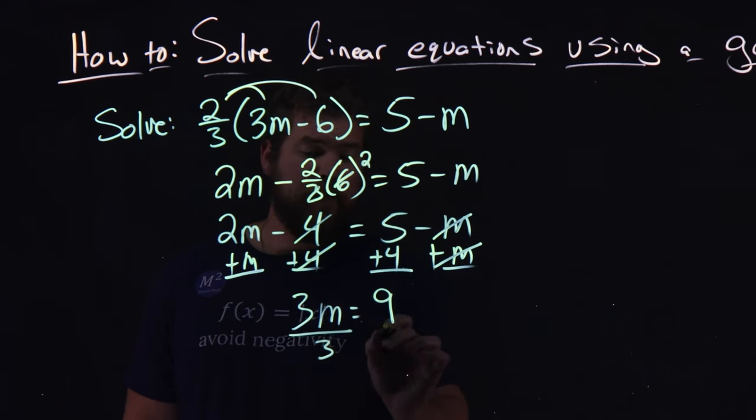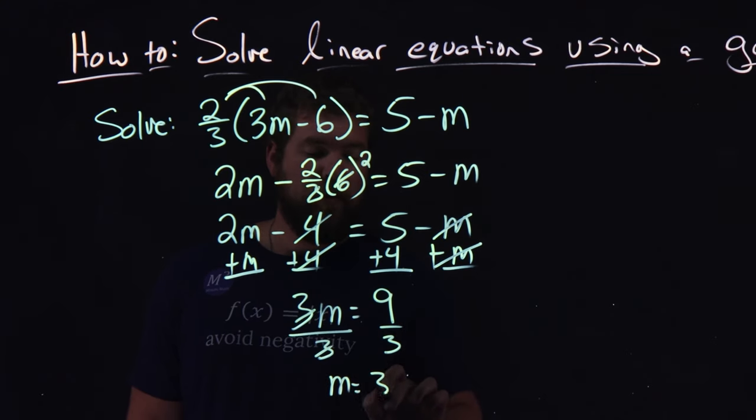From there, we divide 3 to both sides. Opposite of multiplication is division. 3s cancel, and m equals 9 divided by 3, which is 3.